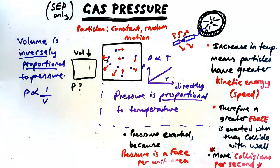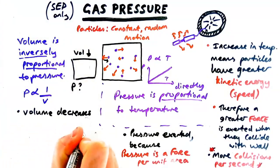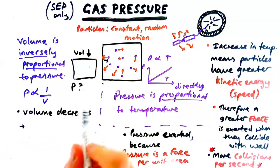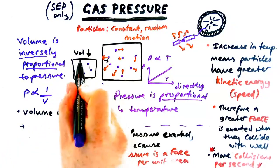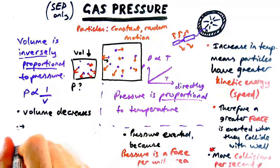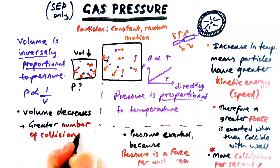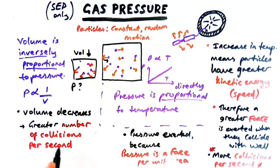Now the reason for this is as follows. When volume decreases essentially there's less room for the particles to be in. They're still moving around randomly but there's less room for them as less space than there was before. So what that means is that there's a greater number of collisions per second. Because there's less room for them they're going to hit the wall more often but not just more often it's more often per second.